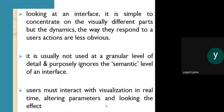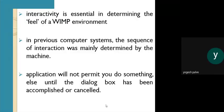Interactivity is essential in determining the field of a WIMP environment. In previous computer systems, the sequence of interaction was mainly determined by the machine — actions were performed step by step, taking a large amount of time. The application would not permit you to do anything else until the dialog box had been accomplished or cancelled.